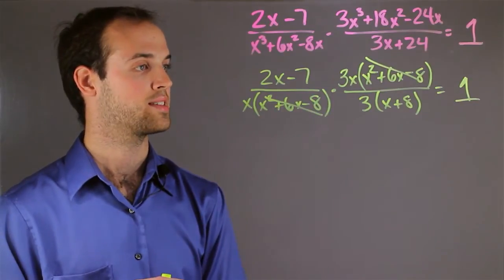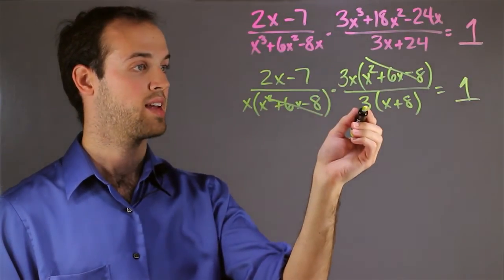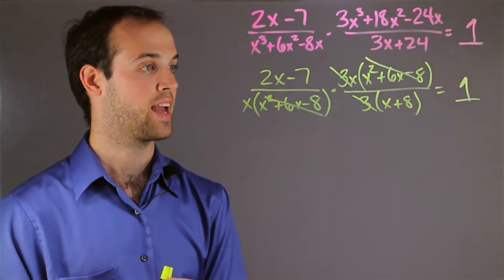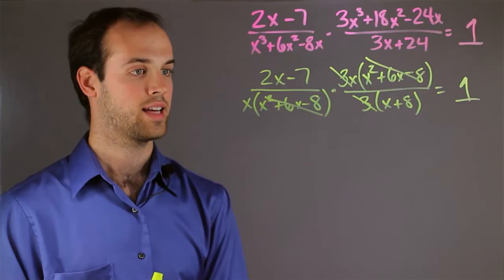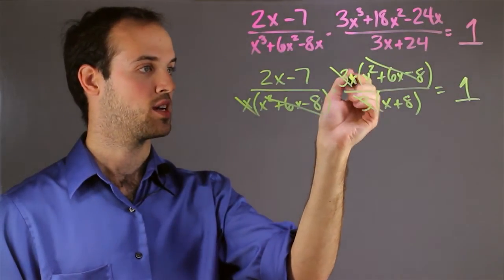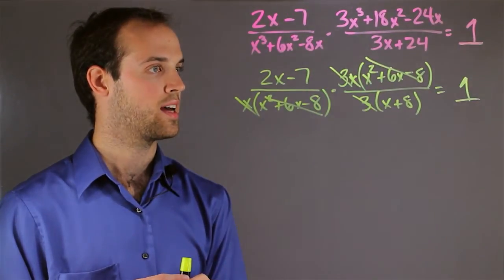Another thing I can cancel out is this 3 that I see right here and down here. And if it's in the numerator and the denominator, then that means I can cancel it out. The last thing that I can cancel is this x right here can cancel with this x over here. And it looks like that's about it.